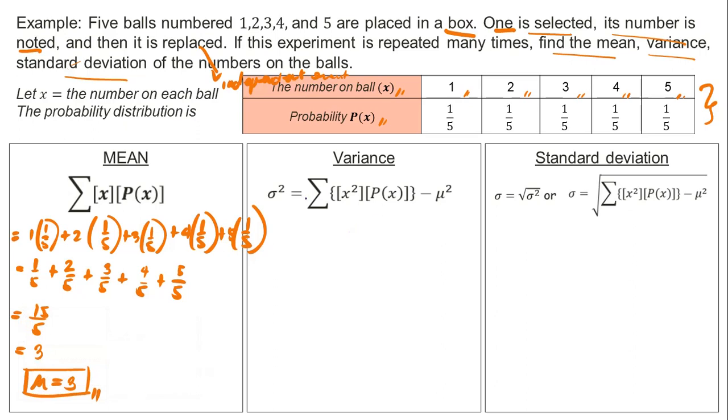Next one is variance. The difference between mean and variance is that for variance, the outcome is squared before we multiply by the corresponding probability. And after we get the sum, we subtract our mean squared. So domino effect, if the mean is wrong, everything will be wrong.